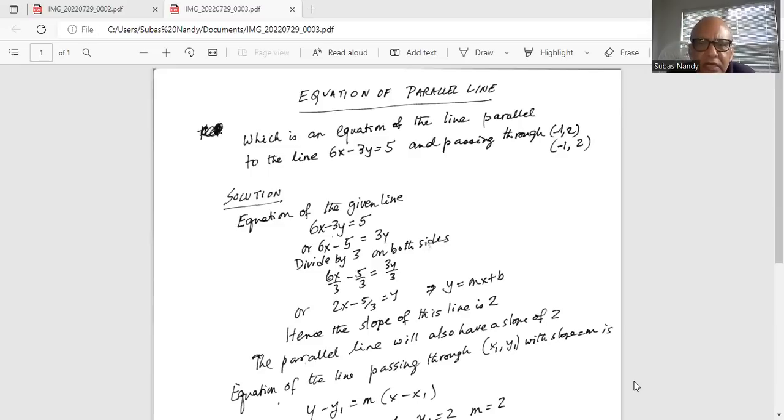So x coordinate is minus 1, y coordinate is 2. Equation of the given line is 6x minus 3y equal to 5. We subtract 5 from both sides to get 6x minus 5 minus 3y equal to 0, then add 3y on both sides to get 6x minus 5 equal to 3y. Then we divide by 3 to get 6 divided by 3x minus 5 by 3 is equal to 3y by 3. So 2x minus 5/3 is equal to y.